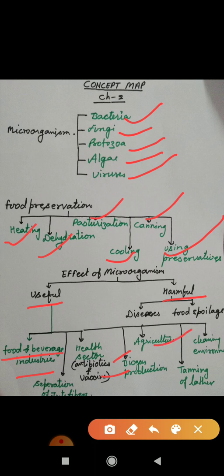The next field is agriculture. Microorganisms are useful here as they make the soil fertile. There are many nitrogen-fixing microbes which make the soil fertile, such as Rhizobium and Nitromonas, etc.